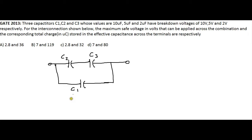Three capacitors C1, C2, and C3 whose values are 10µF, 5µF, and 2µF respectively have breakdown voltages of 10V, 5V, and 2V respectively. For the interconnection shown in this circuit, we need to find out the maximum safe voltage in volts that can be applied across the whole combination and the corresponding total charge in micro coulombs across the terminal.